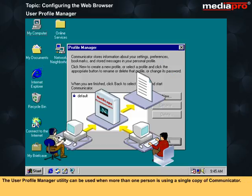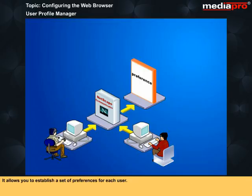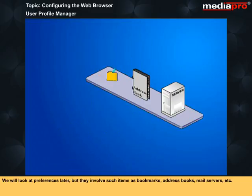The User Profile Manager utility can be used when more than one person is using a single copy of Communicator. It allows you to establish a set of preferences for each user. We will look at preferences later, but they involve such items as bookmarks, address books, mail servers, etc.